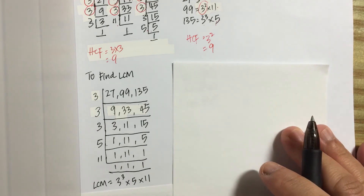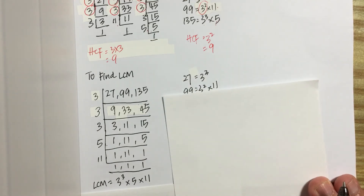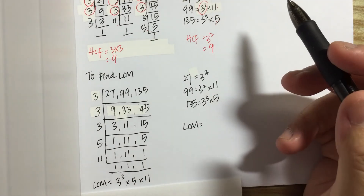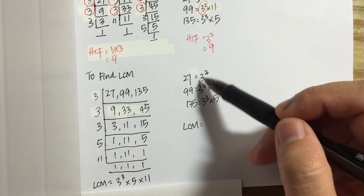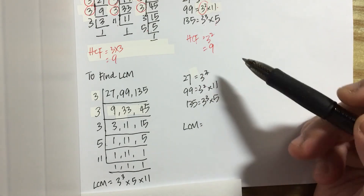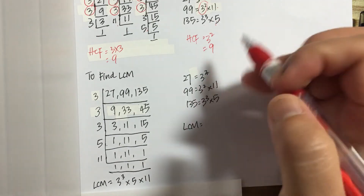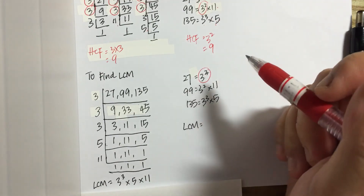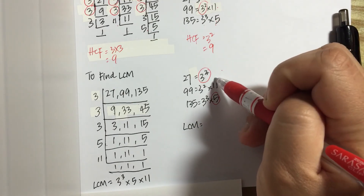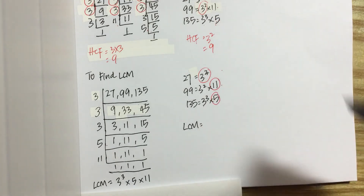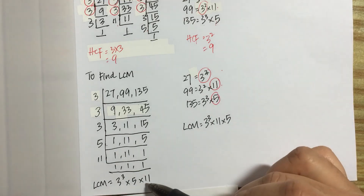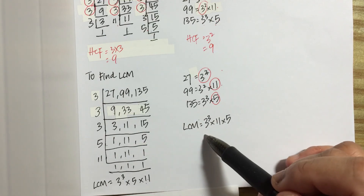Another method is to use the index notation found earlier. To find LCM, since we want the multiple, we look for the factors with the highest power. We have 3 cubed, 3 squared, and 3 cubed — we can choose either 3 cubed and circle it. Next, 5 does not appear in the other numbers, so we circle it. Similarly for 11. Therefore LCM is 3 cubed times 11 times 5. Both methods give us the same answer.